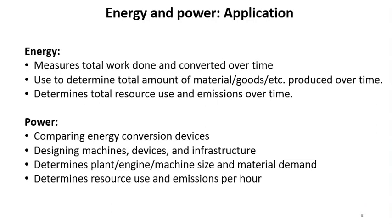Energy and power have specific applications. With energy we can measure total work done and the work converted over time. We can also use it to determine the total amount of something produced over time — for example, when we know the energy input into a steel mill we know how much steel can be produced with that energy. So it tells us at which scale things can happen, whereas power tells you something about the rate at which things can happen — how big an energy conversion device has to be dimensioned to get the energy transferred in a certain amount of time.